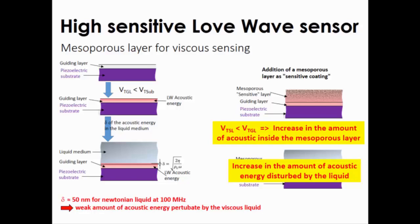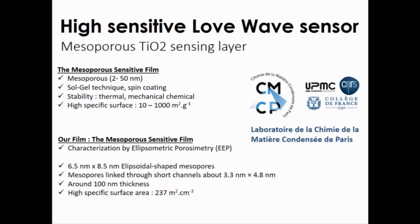For this, the candidate we propose is a very known layer, as titanium dioxide, realized by our partner in Paris. This layer is realized by the Sol-Gel technique and deposited by spin coating, characterized by ellipsometric porosimetry. We have ellipsoidal-shaped mesopores near the size of a few nanometers, and the mesopores are linked through short channels on the side of a nanometer. Each deposition is about 100 nanometers of thickness, with a high specific area, as you can see there.